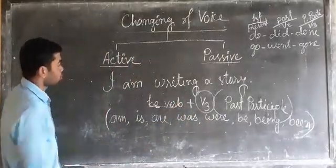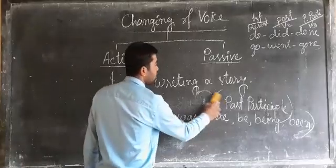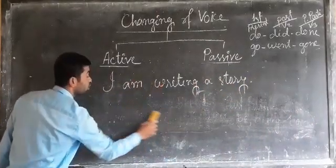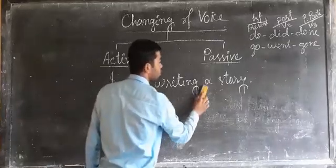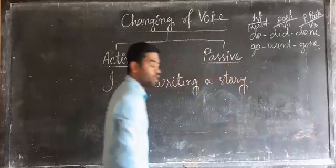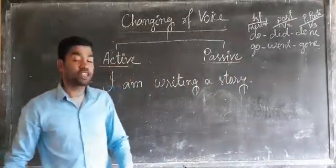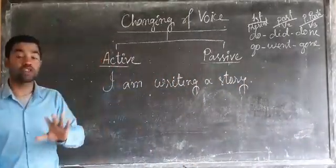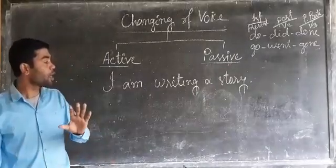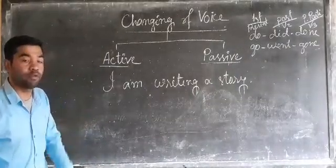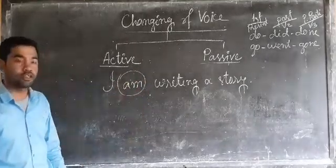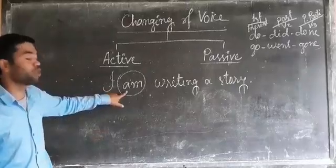In this particular sentence — 'I am writing a story' — at first you should know in which category it is included, whether it is active or passive form. To be a passive form sentence, there should be a be-verb. 'Am' is a be-verb and it is available here. So in this sentence, be-verb is available.